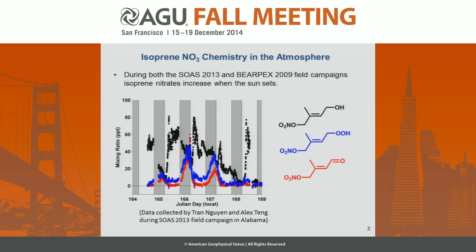NO3 chemistry is important in the atmosphere because we detect it occurring in the field. In both the SOAS 2013 and BarePax 2009 field campaigns, we've detected these products. These nitrates form when the sun sets because NO3 is readily photolyzed during the day. Results from SOAS 2013 show in blue the nitroxyhydroperoxide and in red the carbonyl nitrate both increase at night, shown in the shaded region. The hydroxy nitrate is a little unclear just from field study results because it's also a product from OH oxidation of isoprene.